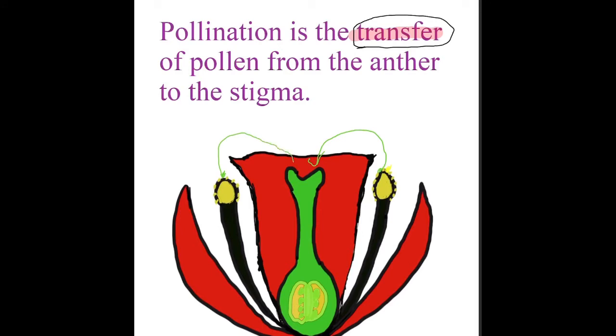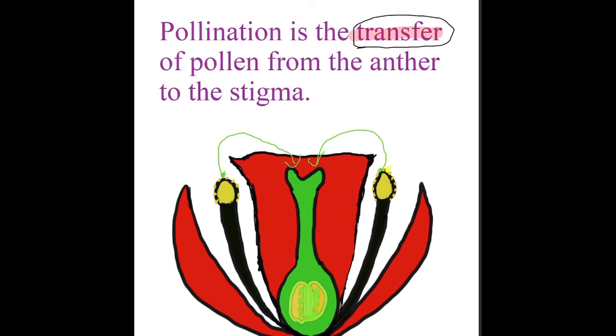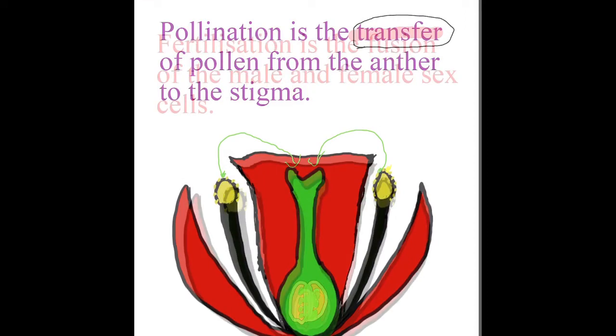The agents of pollination are usually animals like bees or other animals that go to the flower to take in the nectar.